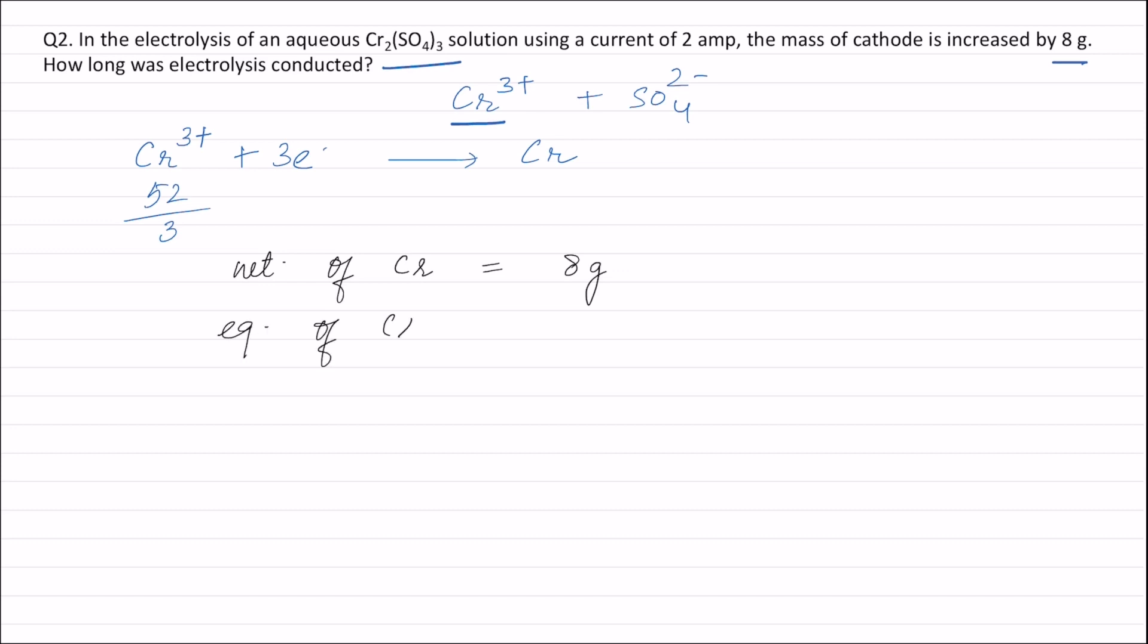The equivalence of chromium, with equivalent weight 52 by 3. Now we know that one equivalent of matter is liberated by one Faraday of electricity. Therefore, Faradays of electricity consumed in this electrolysis will be equal to the equivalence of chromium, that is 8 by 52 into 3.